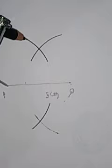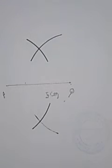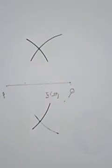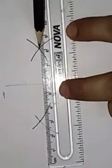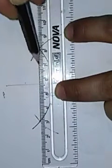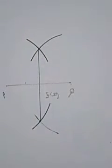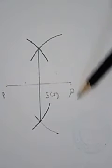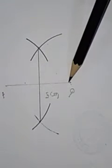Now after getting these two points, we have to join it with the help of a ruler and pencil, and this is the desired axis of symmetry of PQ. Thank you.